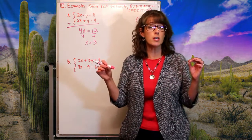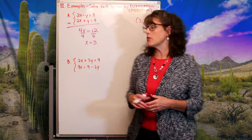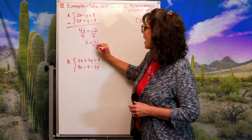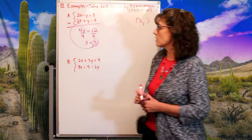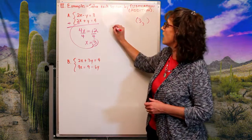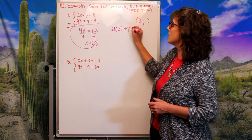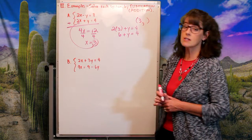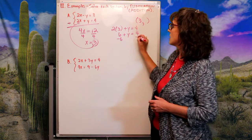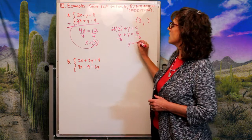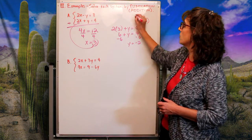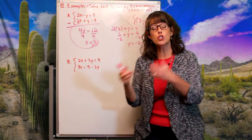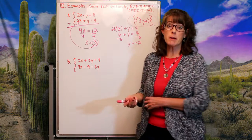I'm going to substitute x = 3 into the first equation: 2 times 3 plus y equals 4. 2 times 3 is 6, and subtracting 6 from both sides gives me y equals negative 2. Now I know the y coordinate of my point of intersection.